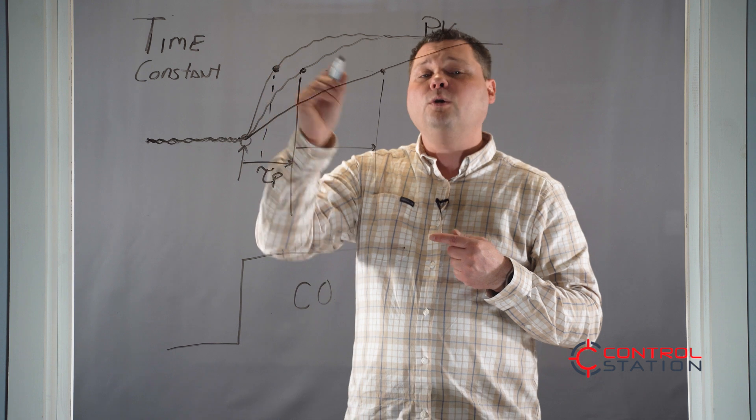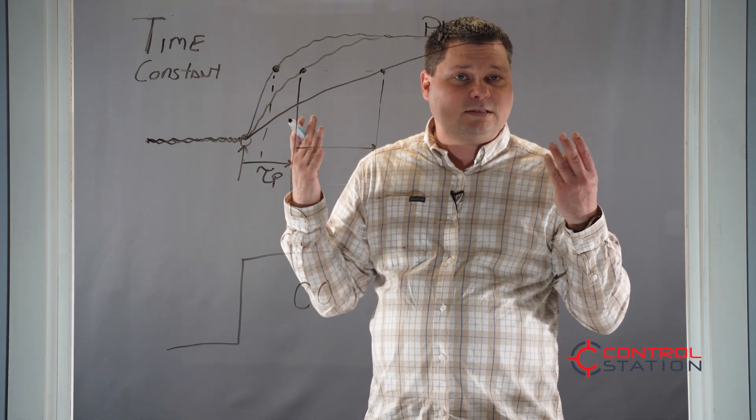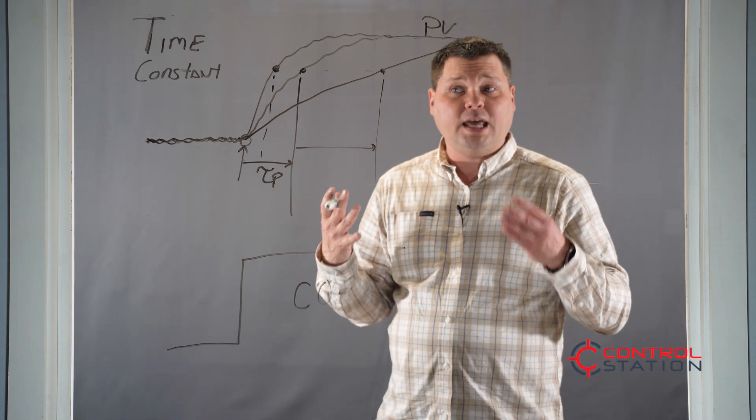You can't have a flow loop that has a one second process time constant execute every 10 seconds. You're going to miss a lot of the dynamics and your control will not be very stable.